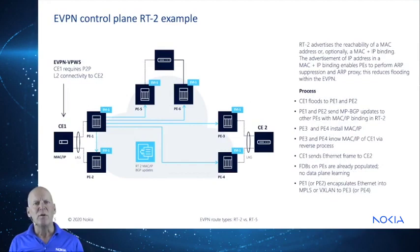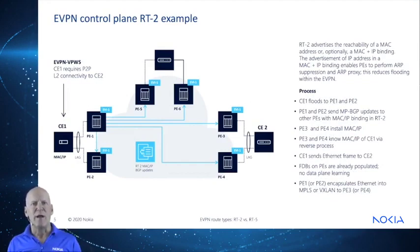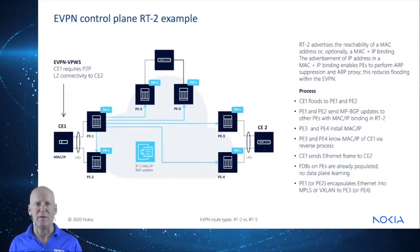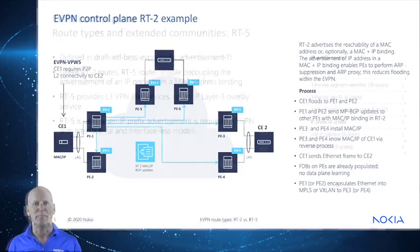Similar to how it works in BGP L3 VPN, RT2 EVPN routes advertise a MAC address and optionally an IP address and subnet mask bound to that MAC. This cuts down on ARP flooding inside the EVPN. This is where RT5 routes may come into play.